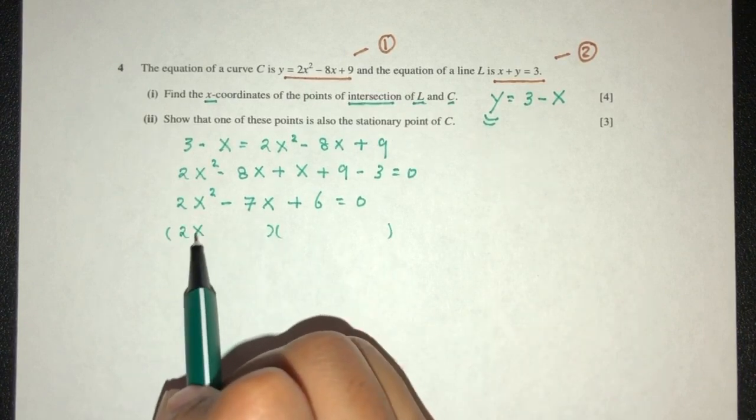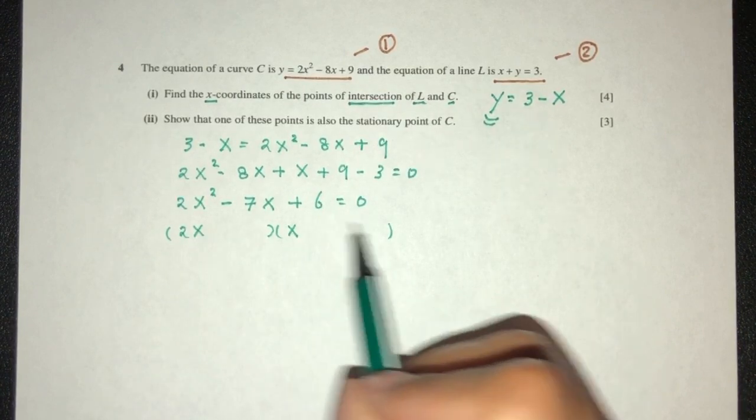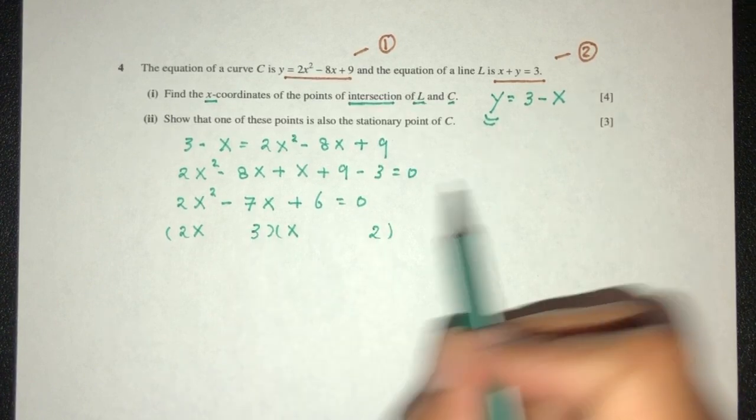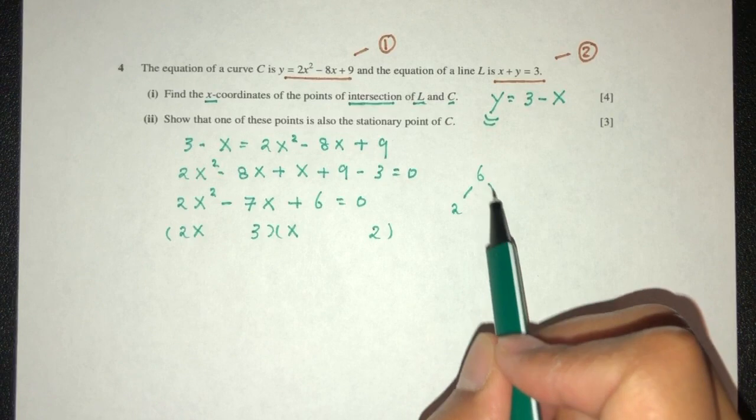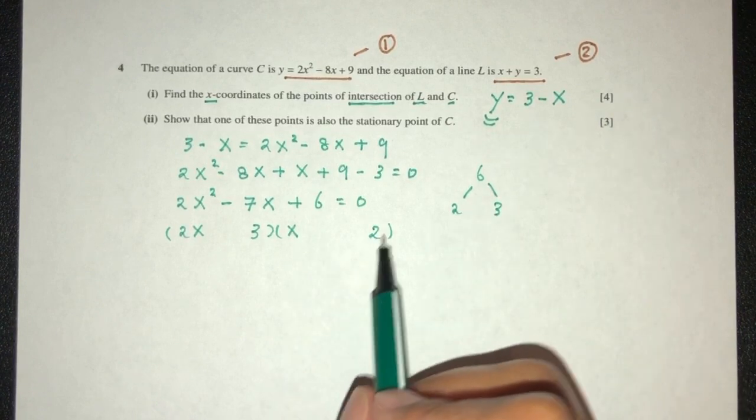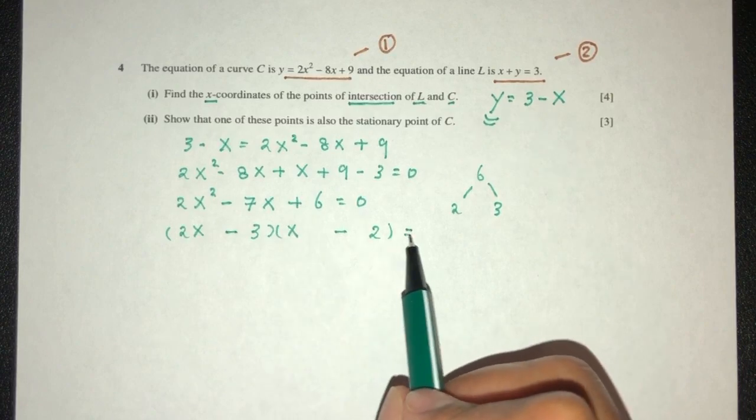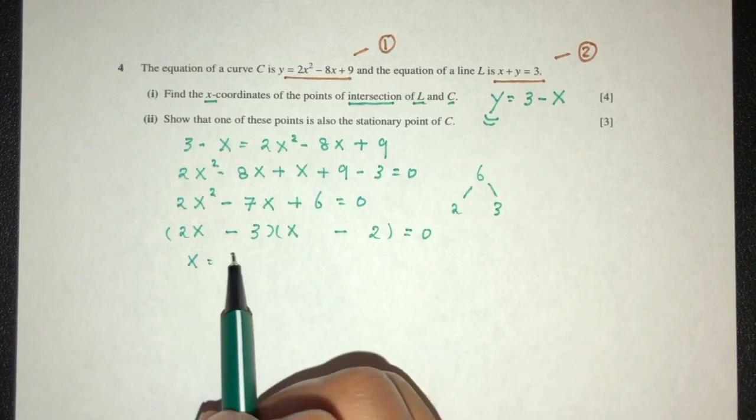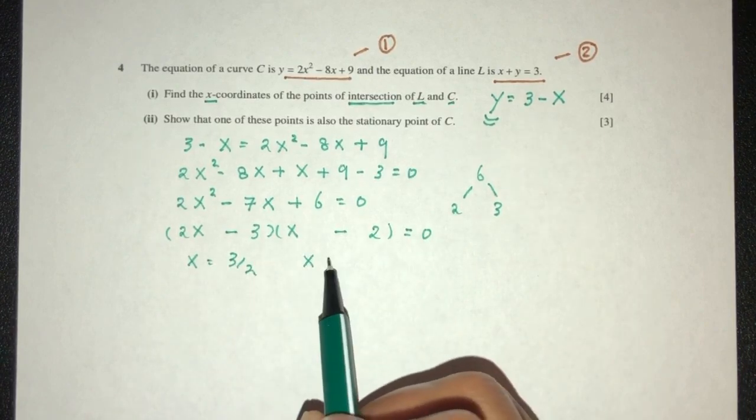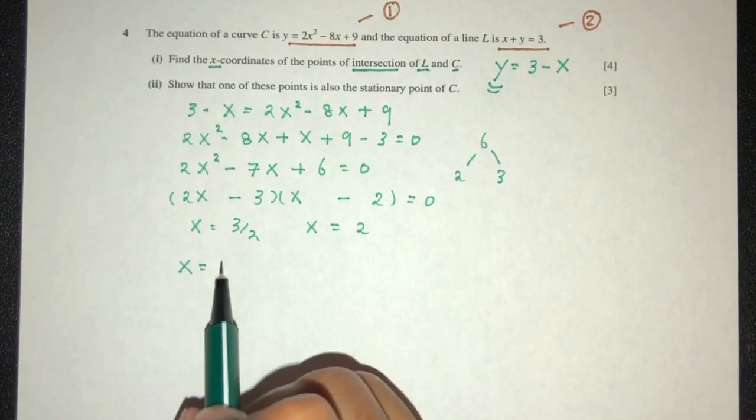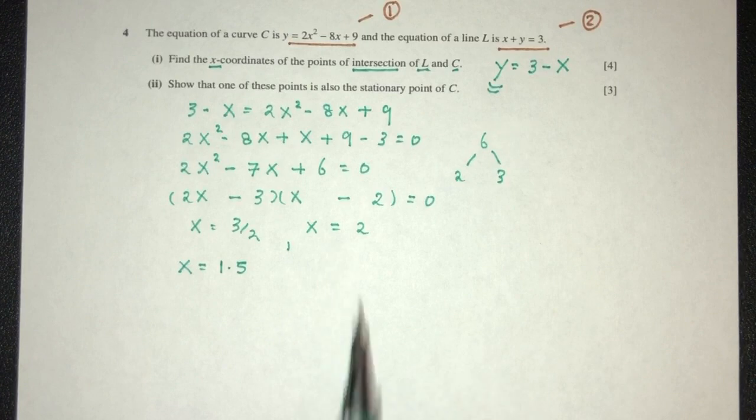Simplify. That will be 2x times x, and 6 can be 2 times 3. We choose 2 here. We need minus 4 minus 3 to get minus 7. x will be 3 over 2, x will be the value of 2. Or you can write x will be 1.5 or can be 2.